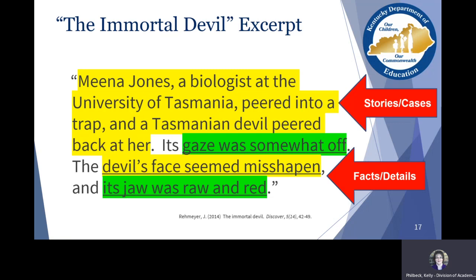We've gone through the excerpt, highlighted or underlined, then gone through and labeled. We have claimed some evidence from the text, given it a name — stories and cases, facts and details — saying exactly what type of evidence it is.